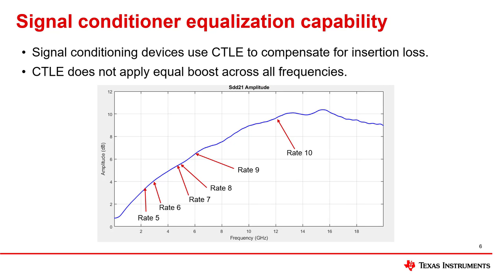When designing a signal conditioner into a CPRI application, it's also important to consider the signal conditioner equalization capability. One of the key receiver equalization methods that redrivers and retimers use is continuous time linear equalization, or CTLE. CTLE applies high frequency boost to signals in order to compensate for insertion loss. CTLE does not apply equal boost across all frequencies, so it's important to consider the required equalization for a given data rate when selecting the signal conditioning device.